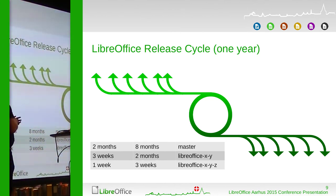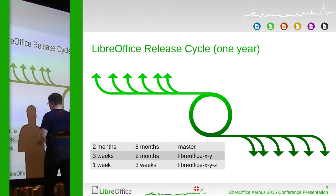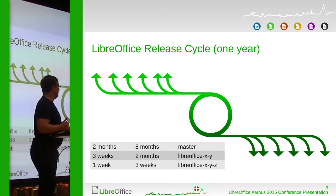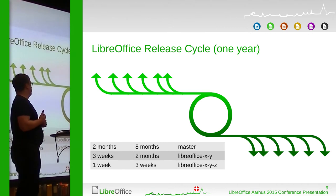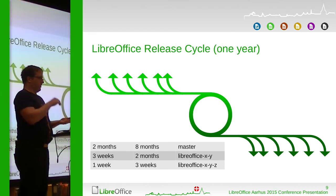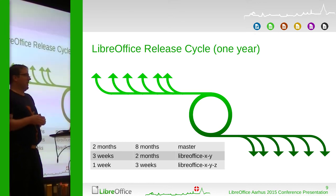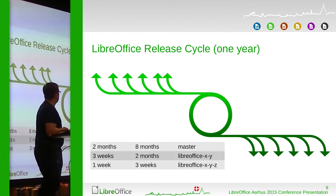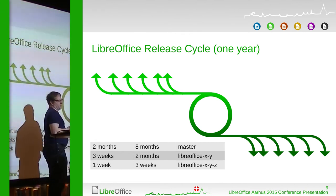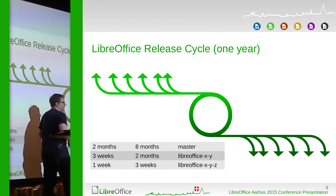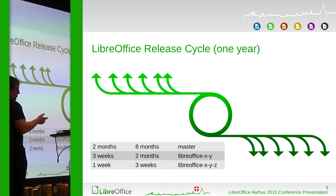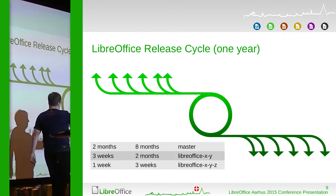What does this mean for when your commit will be in a release? If you're committing on master it's between two months and eight months. If you commit just before the beta branches off — for example in late November for the winter release — it will be in the release at the end of January, just two months away. If you're unlucky and you commit just after branch-off in June, it will take quite a long time to the next release. For critical bug fixes you want them backported from master to the release branch.